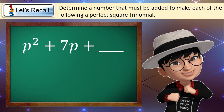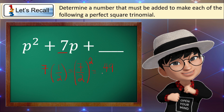Let's try another example: p squared plus 7p plus blank. To make this a perfect square trinomial, we get the numerical coefficient of our second term, which is 7, and multiply by one half to get 7 over 2. Then we square it: 7 times 7 is 49, and 2 times 2 is 4. So we add 49 over 4 to make it a perfect square.